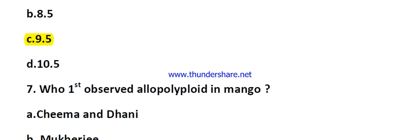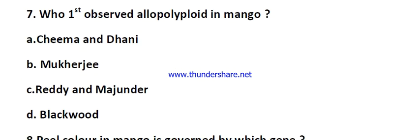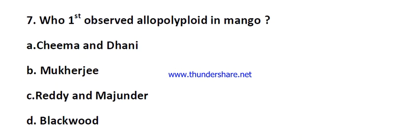Question number seven: who first observed allopolyploidy in mango? The right answer is Mukharji. In 1950, he observed allopolyploidy in mango.